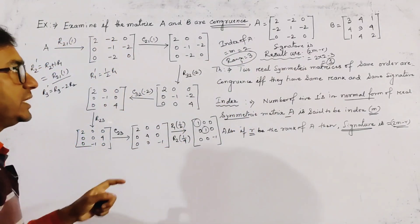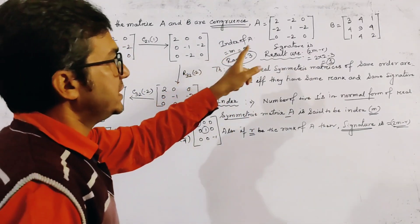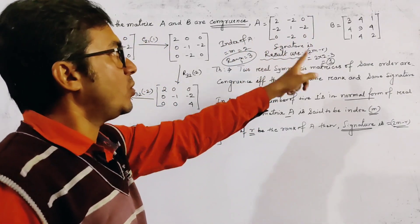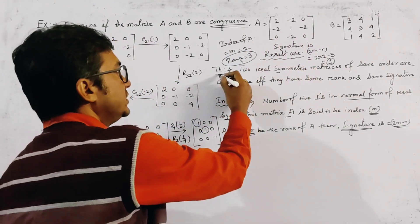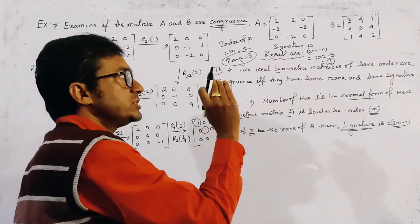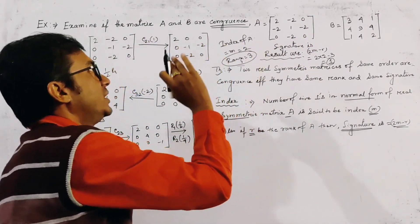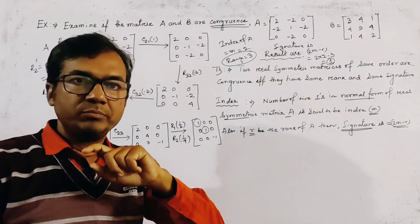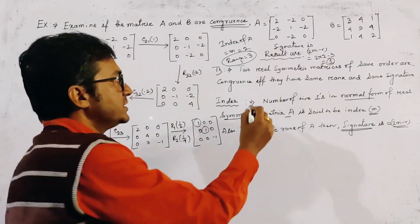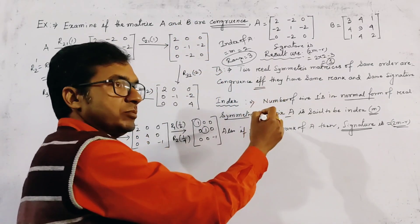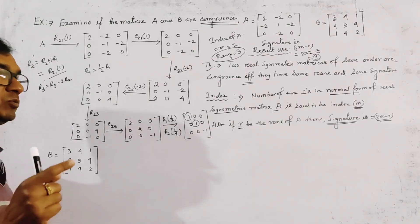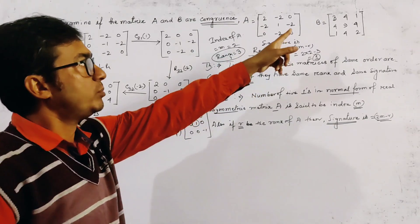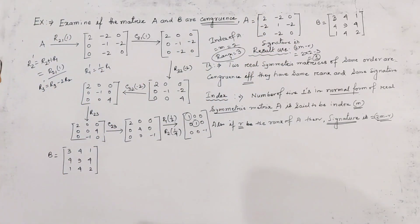Now, if the rank and signature of matrix B are also 3 and 1 respectively, then by using this theorem we can say that A and B are congruent, otherwise not, because this is an if and only if theorem. We now have to find the rank and signature of matrix B.